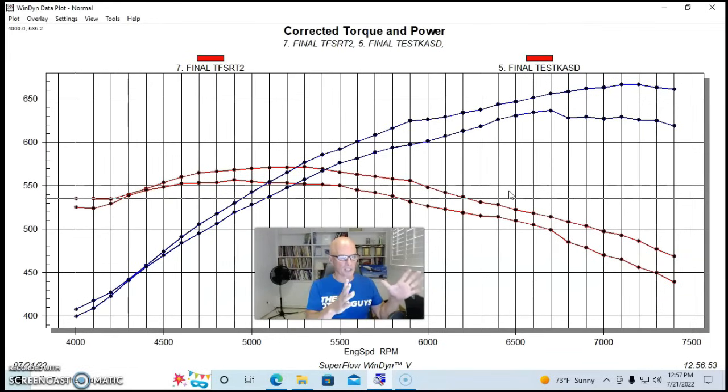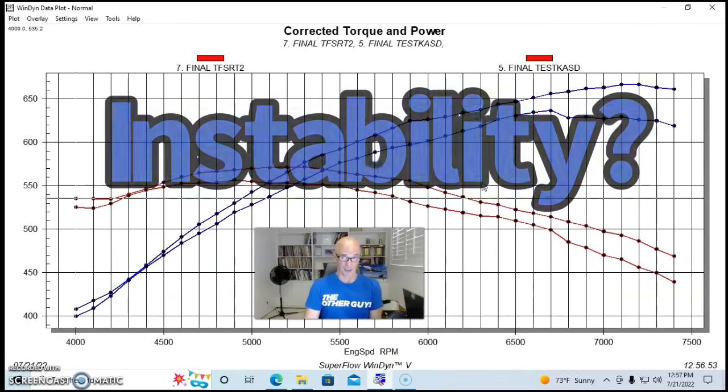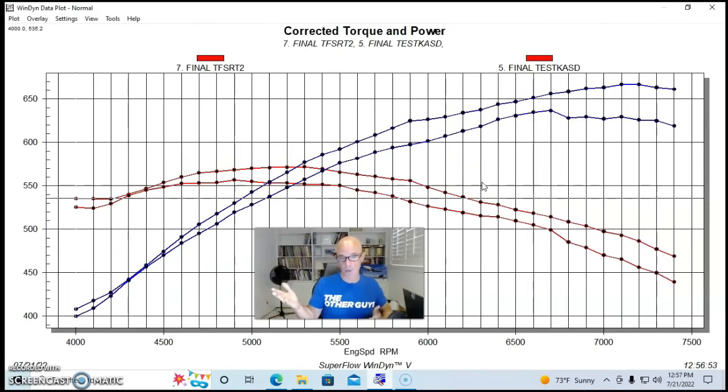I was so concerned based on the flow numbers and what I expected from these, because I know John knows how to make power, what I did was after we had already run the TFS R heads and then we'd run these Cosi heads, I thought well maybe something's wrong with the motor. So we took the Cosi heads back off and I put the Trick Flow heads back on and it repeated within one horsepower of the last time that we ran it. So there was nothing wrong with the motor, it was in perfect shape. Looking at this curve, I would suspect maybe that there is a valve spring issue out at the top is kind of what it looks like, but that's why we test.